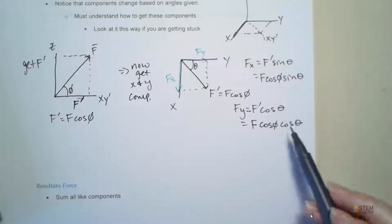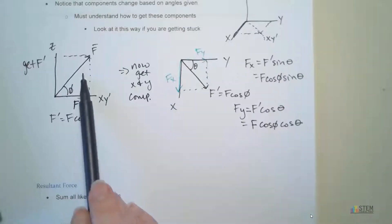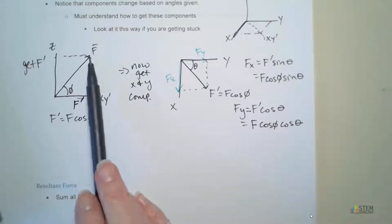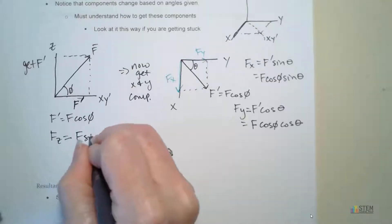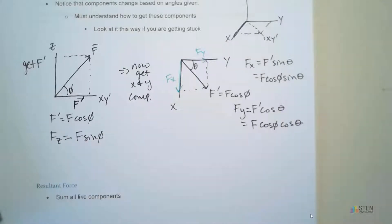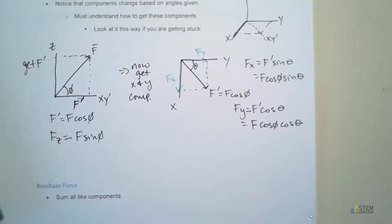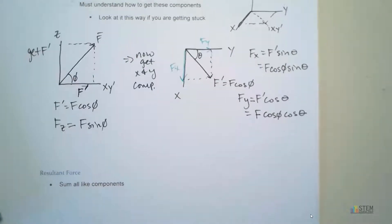This gives us the exact same thing we had before. And from this one over here, you can get Fz — Fz is just F sine phi. So same exact result. Maybe it'll be easier if you look at it from a 2D sense. But once you do these enough times, you'll just be able to look at the picture and go. Initially it takes people a while, but just take some time looking at it and eventually it'll make sense.